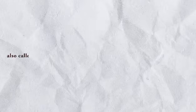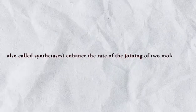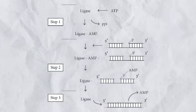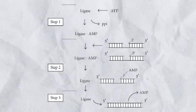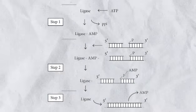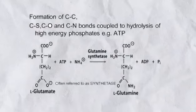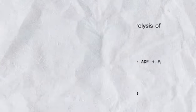Type number six: Ligases, also called synthetases. Enhance the rate of joining of two molecules. They usually accomplish this by making use of energy derived from the breakdown of adenosine triphosphate (ATP). Examples of ligases include acetyl-CoA synthetase.